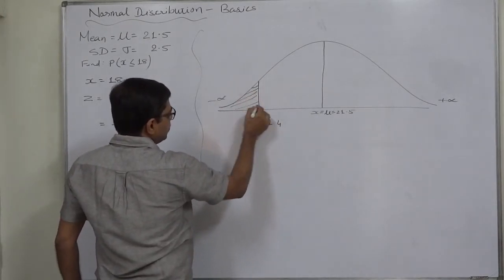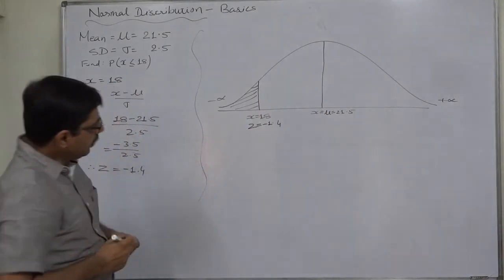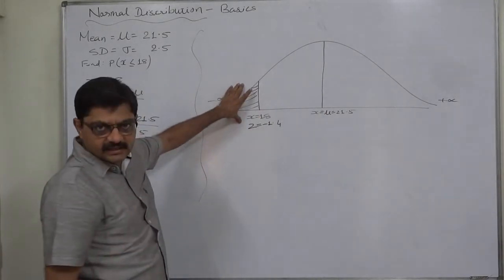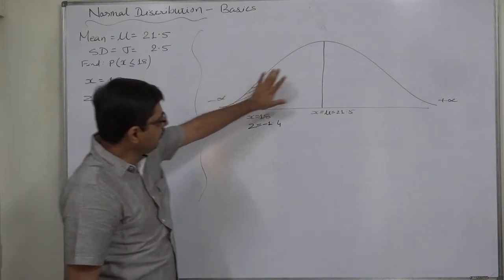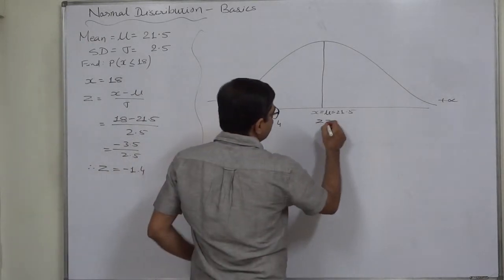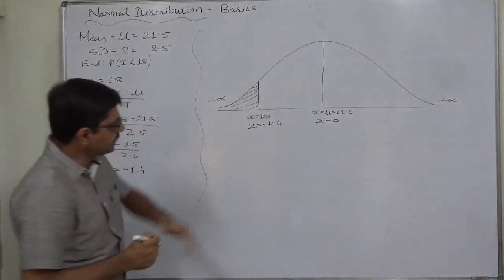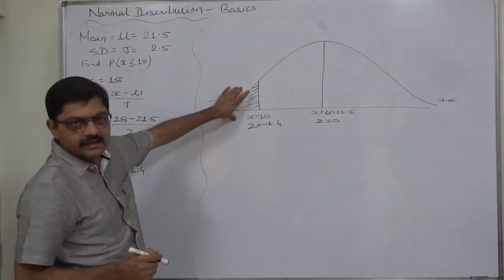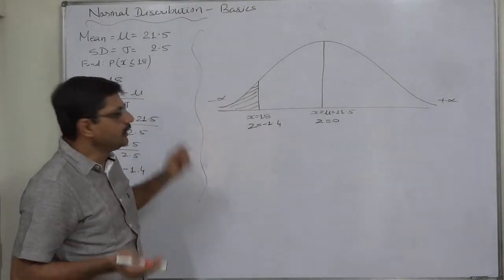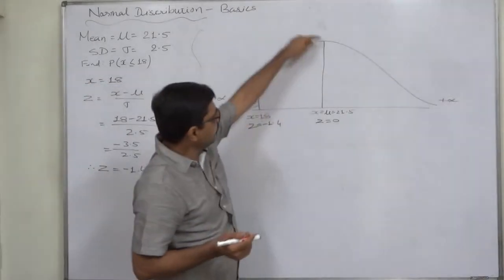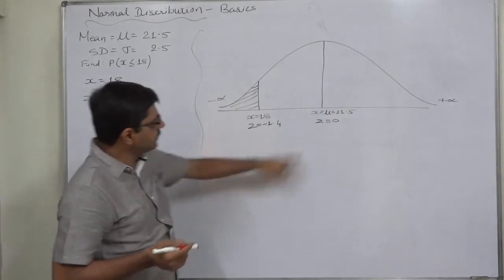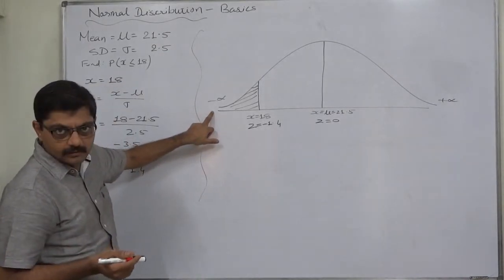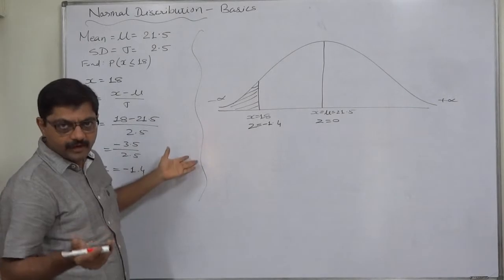That means we are interested in this area. Now we cannot directly find this area. We can find this area, the area between z 0 and z something from the table. So we can have this area. Now how can we find this area? It is very simple. We know that the area of the entire left hand side from z 0 to negative infinity is 0.5.